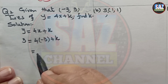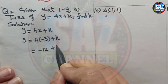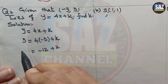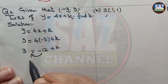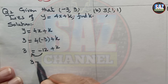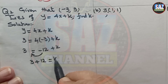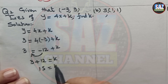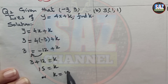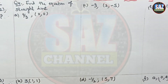So 4 × (-3) = -12, giving -12 + k = 3. Shifting -12 to the other side: 3 + 12 = k, so k = 15.